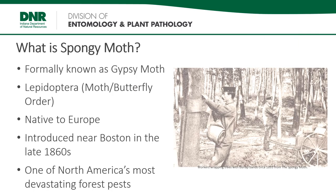So what is Spongy Moth? Spongy Moth's scientific name, Lymantria dispar dispar, formerly known as Gypsy Moth, is an insect in the Lepidoptera order — that is, moths and butterflies. It is originally from Europe and was accidentally introduced near Boston in the late 1860s. By 1890, Spongy Moth was causing widespread defoliation in that area and has gone on to become one of North America's most devastating forest pests.